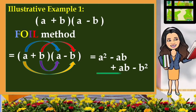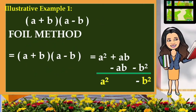And B times negative B is equal to negative B squared. With this, let us simplify. Bring down A squared. And the negative AB plus AB, since they are opposite, that is zero, so we don't need to write zero anymore. Bring down negative B squared. So therefore, the result or the product of the quantity A plus B multiplied by A minus B using the FOIL method is A squared minus B squared.